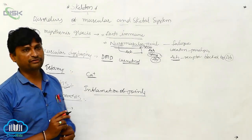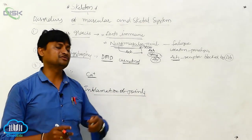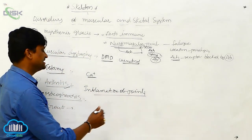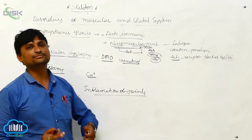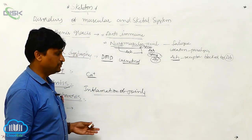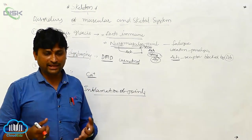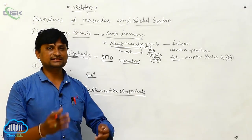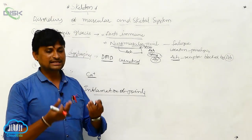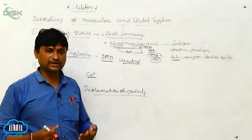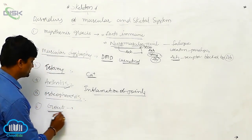Osteoporosis involves the removal of calcium ions from the bones, causing small pores to form in the bones, leading to weakened bones. Older people suffer highly from osteoporosis. When calcium ions are not available from food, the body absorbs calcium from the bones — which act as reservoirs of calcium and phosphates — causing the bones to become weakened.